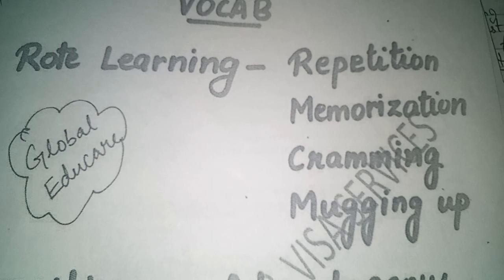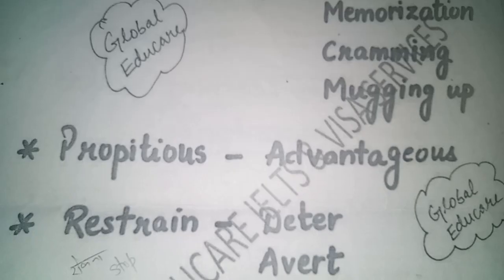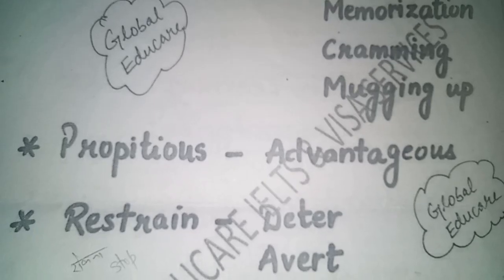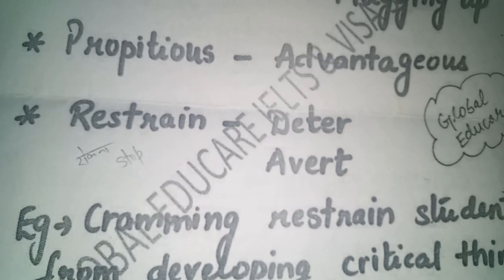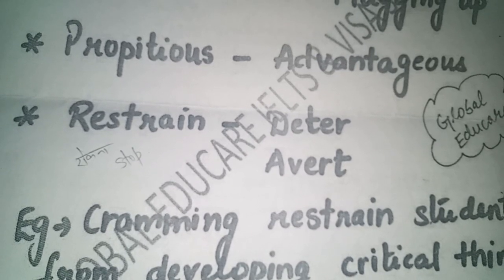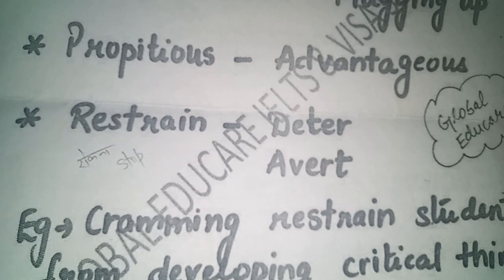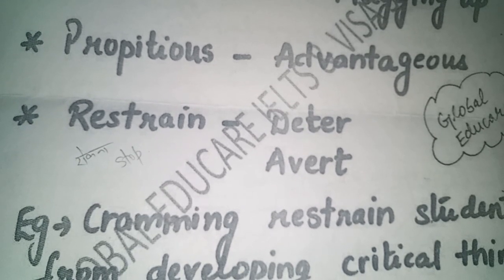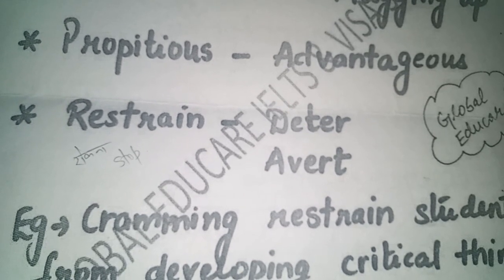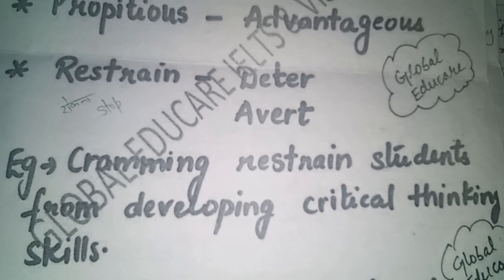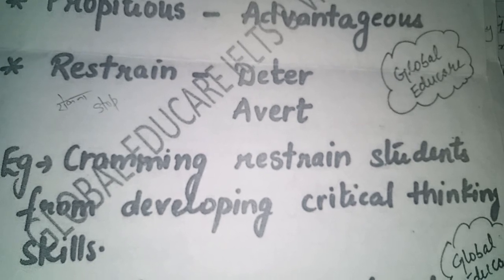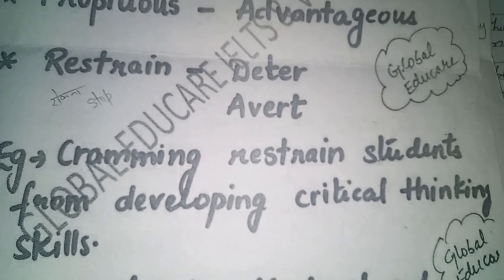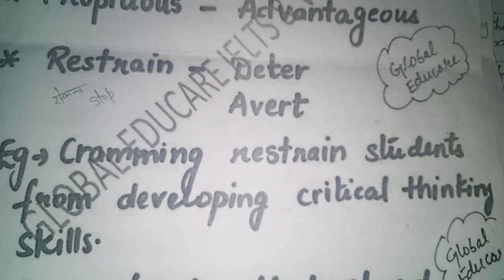You can use these words. For example, 'avert' means to stop. Cramming means rote learning. For example: cramming restrains students from developing critical thinking skills.